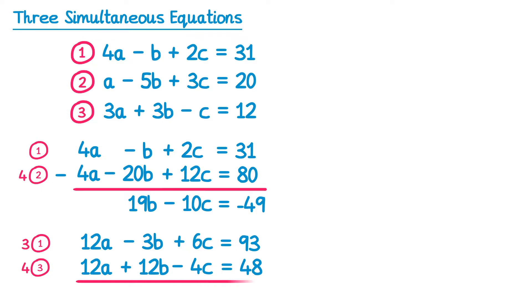Now I can subtract these equations. So 12a take away 12a is 0, negative 3b take away 12b is negative 15b, 6c take away negative 4c is just like 6c add 4c, so 10c, and 93 take away 48 is 45. So I've used two different pairs of equations, eliminated a from both of them, so I now have two equations that just have b and c in them.